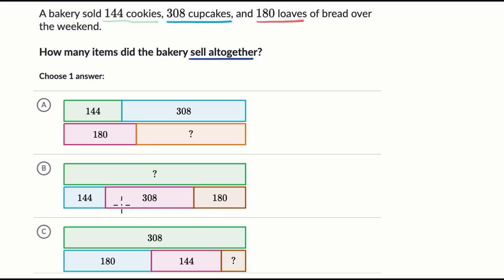Now choice B here, it looks like it has the cookies here, 144. It's got the cupcakes, 308. It has 180 loaves of bread. They're using different colors than I used. And there we have one strip after the other, and they're all being added together for this total amount right over here. So that makes sense. You would add these together to get the total amount. So I like this choice.